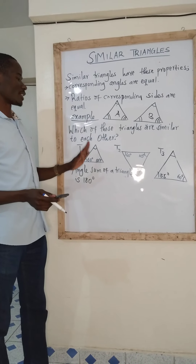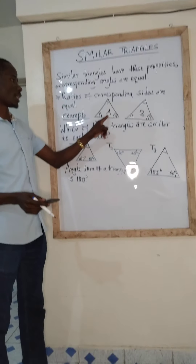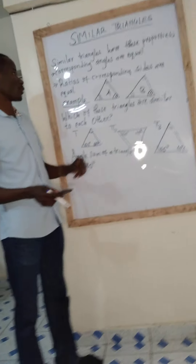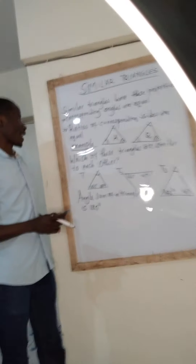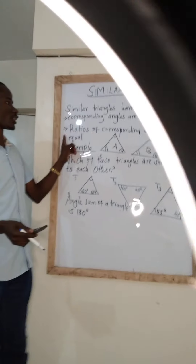If that happens, then we shall say that triangle A is similar to triangle B. Apart from that, another property: ratios of corresponding sides are equal.